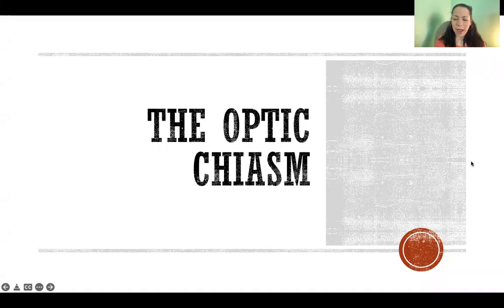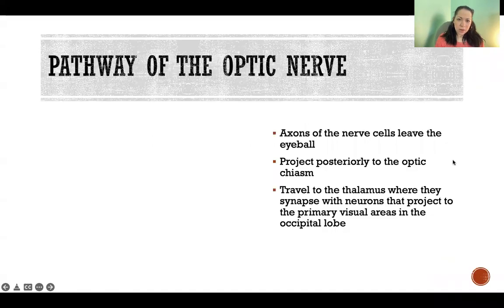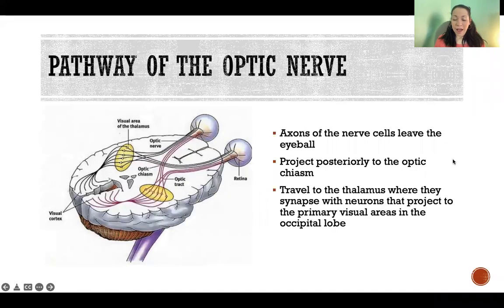Hello. In this video, I'm going to talk about the optic chiasm. So when we talk about the optic chiasm, we're referring to the pathway of the optic nerve, beginning with where the axons of the nerve cells leave the eyeball.